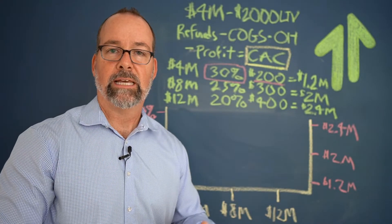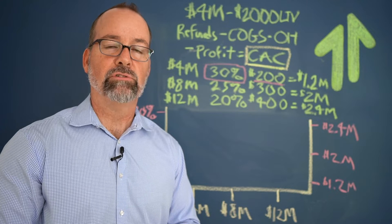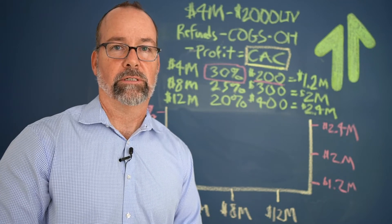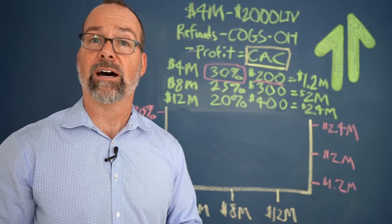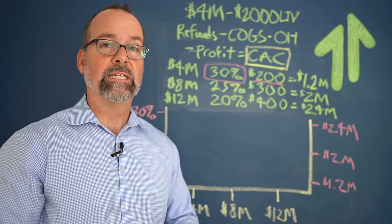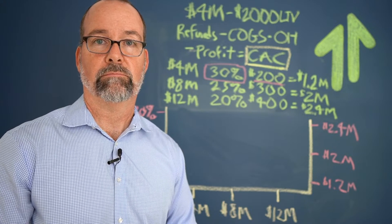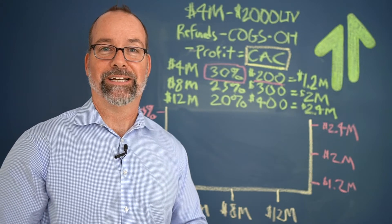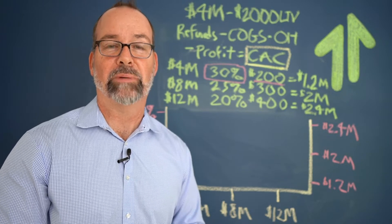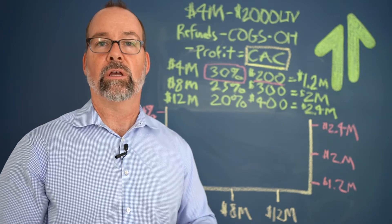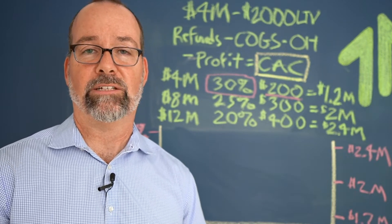In the previous video, we talked about as this business scales, what can you do as a business owner to adjust maybe your expectations from a profitability and a cost perspective in order to be able to pay more to acquire a customer? So as the old chestnut says, he or she who is willing and able to pay more to acquire a customer wins. That principle is 100% accurate as you scale.